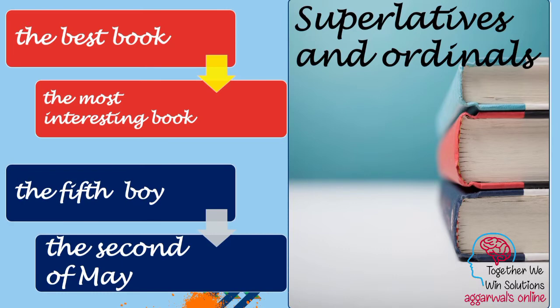Now see carefully — this is really easy and important. We use article 'the' before superlative degrees. For example, 'the best book', 'the most interesting book', 'the most beautiful flower' — these are forms of degrees, and before these degrees we need to use article 'the'.